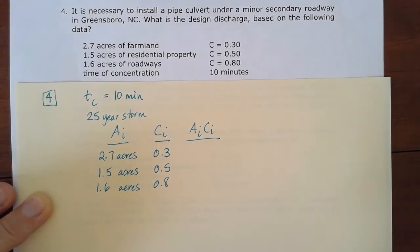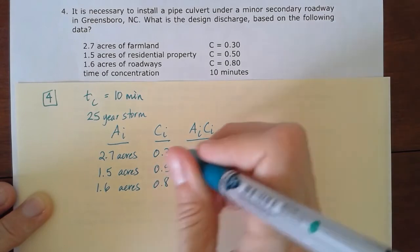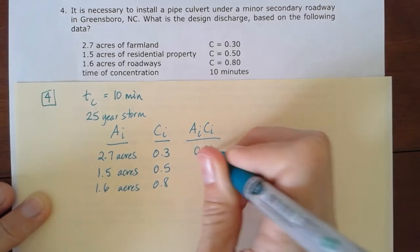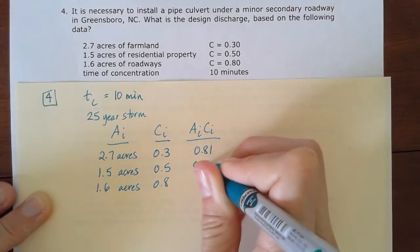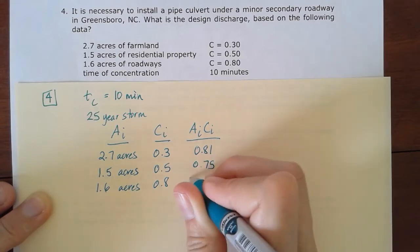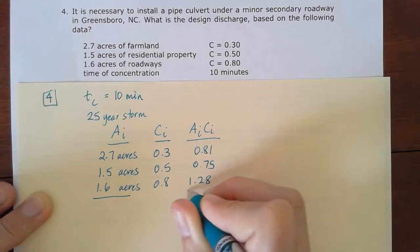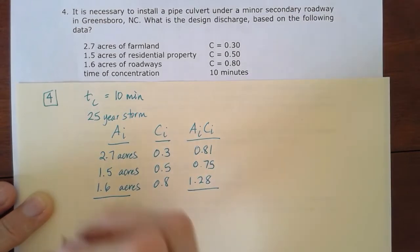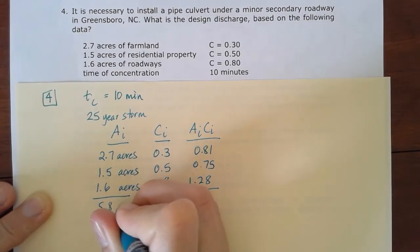And we have 1.6 acres, which has a runoff coefficient of 0.8. So we multiply those across to find their individual area times individual coefficient. And so we get 0.81, 0.75, and 1.28. And then we'll add up the first and last column. So we have our total area is 5.8 acres.